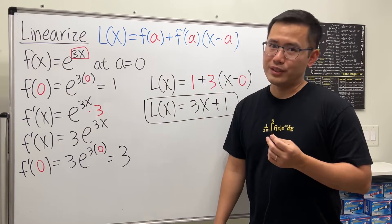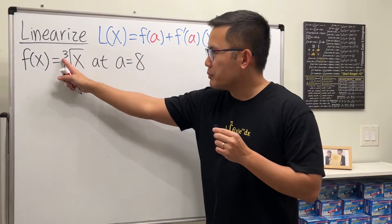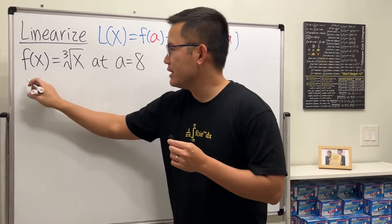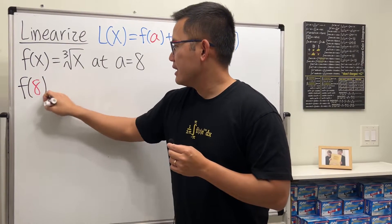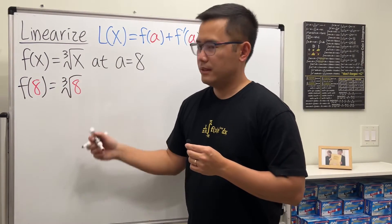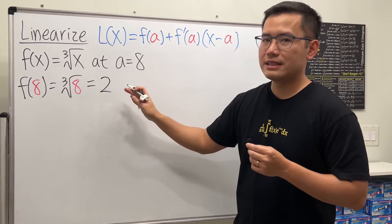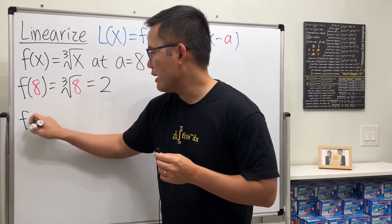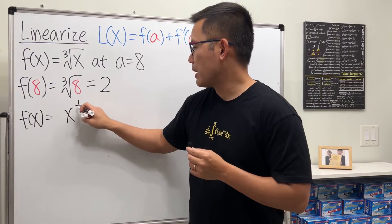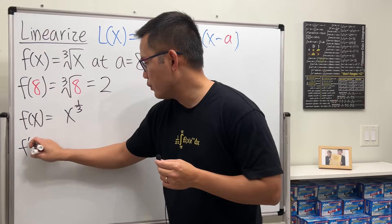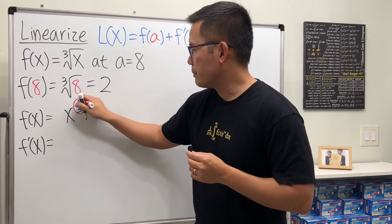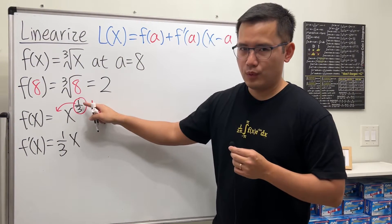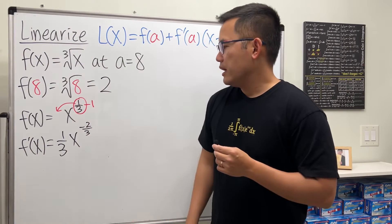Now we're going to linearize the cube root of x at a equals 8. Using the formula, plug 8 into the function first. f of 8 is just the cube root of 8, which equals 2 because 2 times 2 times 2 equals 8. Now get the derivative — write the cube root as x to the 1/3 power, then use the power rule: bring the power to the front, so we have 1/3 times x to the 1/3 minus 1, giving x to the negative 2/3.